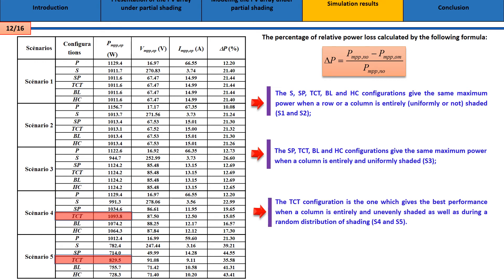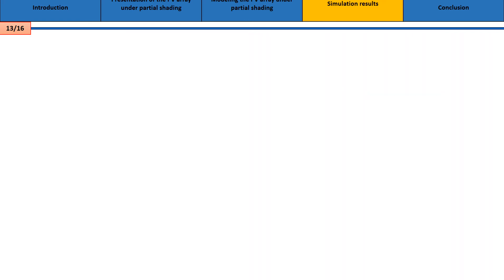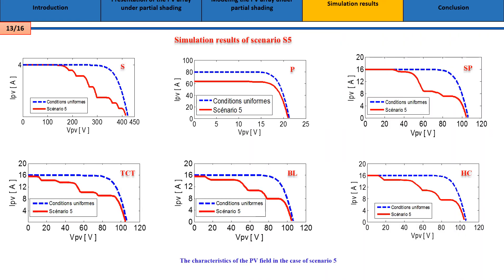Finally, we conclude that the TCT configuration is the one which gives the best performance when a row or a column is shaded, as well as during a random distribution of shadow. This figure shows the characteristics of the PV field in the case of Scenario 5.